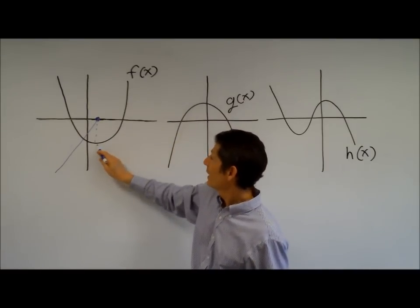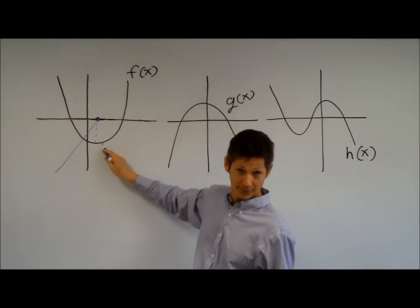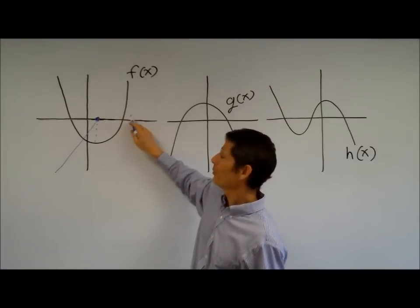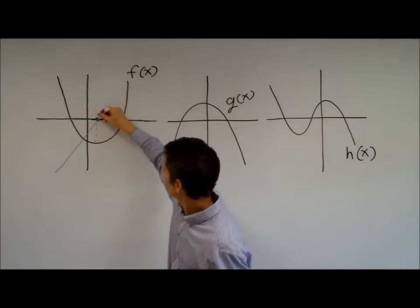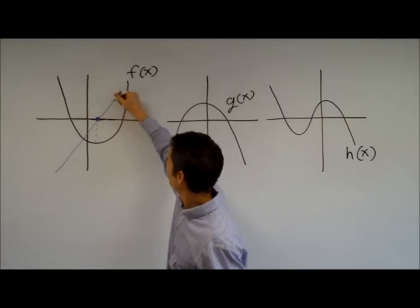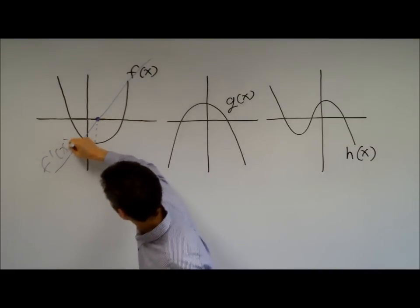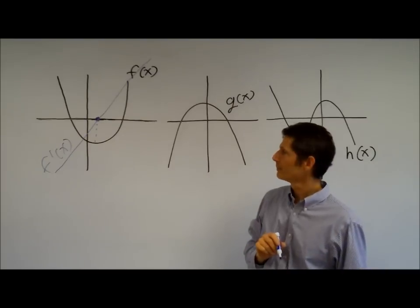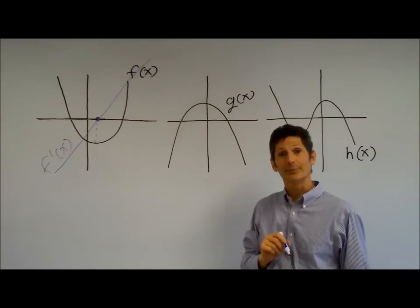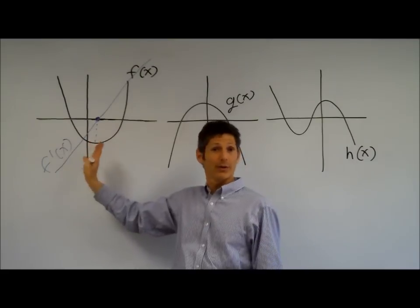On this side, it's slightly positive, the slope, and the slope is getting more and more positive. So my derivative must be positive, getting more and more positive. And that is my derivative, f prime of x. And look, it's a line. Looks like a line. Interesting. Quadratic becomes linear, the derivative.